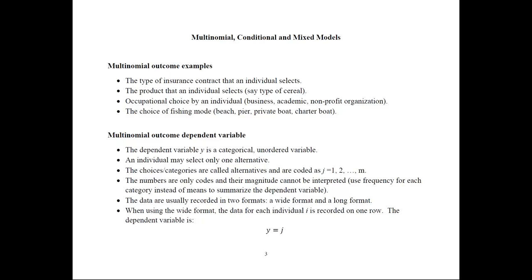The next assumption is that an individual may select only one alternative. So in these examples, if an individual is faced with several products, they could eat only one of them. The choices or categories are typically coded as J equals 1, 2, and so on until M — these are called the alternatives. They don't have to be coded with numbers; they could be coded with their description, like business, academic, or nonprofit. Most software can read either numbers or letters.